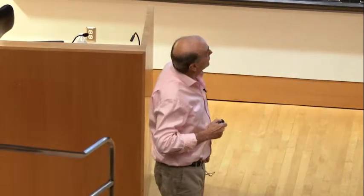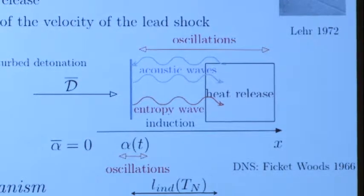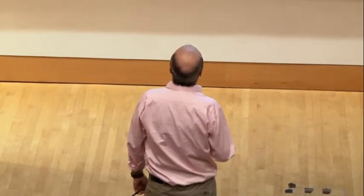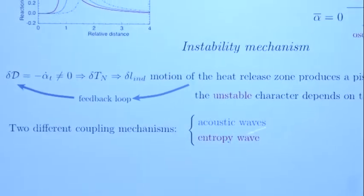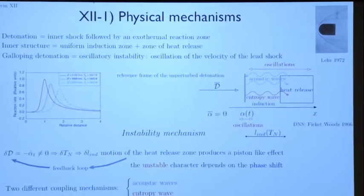To close the loop, if you have a change in the shock — in the von Neumann state — you are going to perturb the reaction rate. But to send the information back to the shock and close the loop, this can only be done by acoustics. So even in the planar case you have a mechanism that is not easy to solve analytically, because you have three mechanisms of propagation for the information.